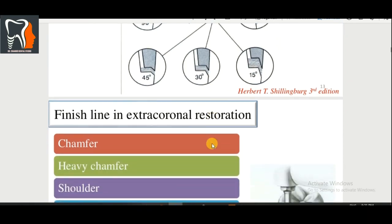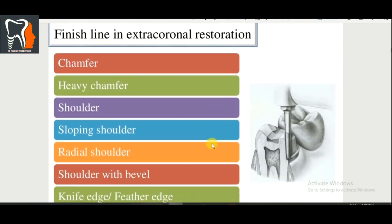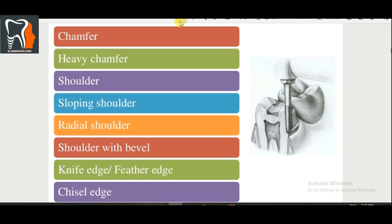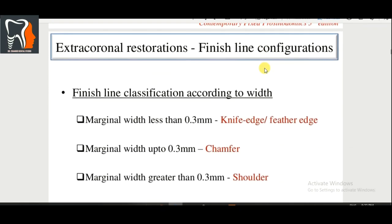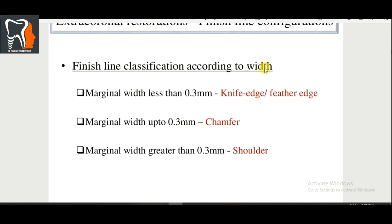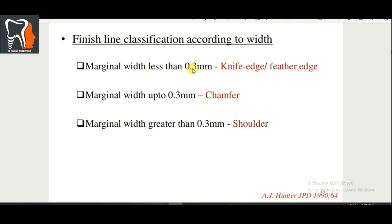Finish lines in extra-coronal restoration: the types are chamfer, heavy chamfer, shoulder, sloping shoulder, radial shoulder, shoulder with bevel, knife edge, feather edge, and chisel edge. Classification according to marginal width: less than 0.3 mm is knife edge or feather edge; up to 0.3 mm is chamfer; and greater than 0.3 mm is shoulder.